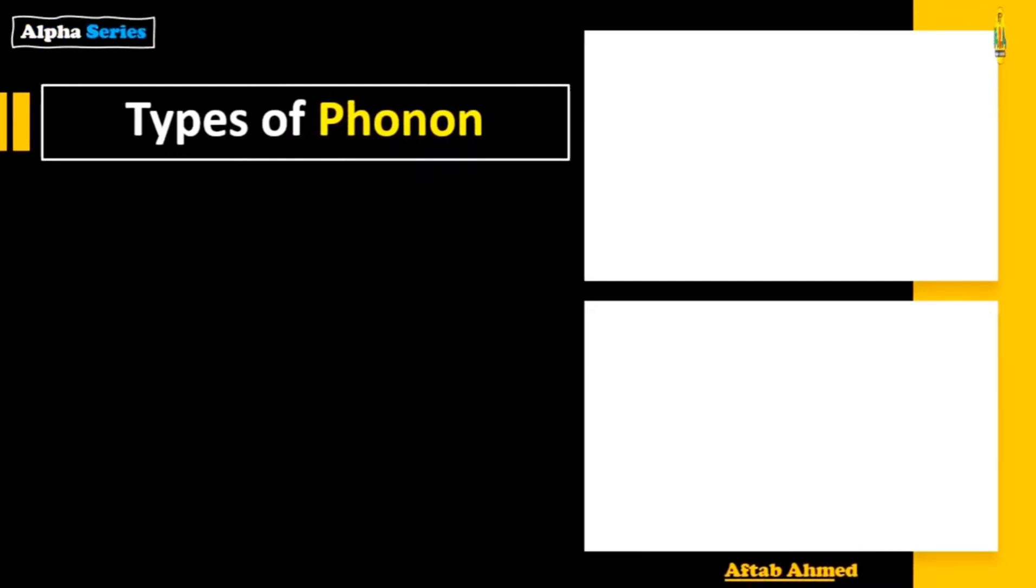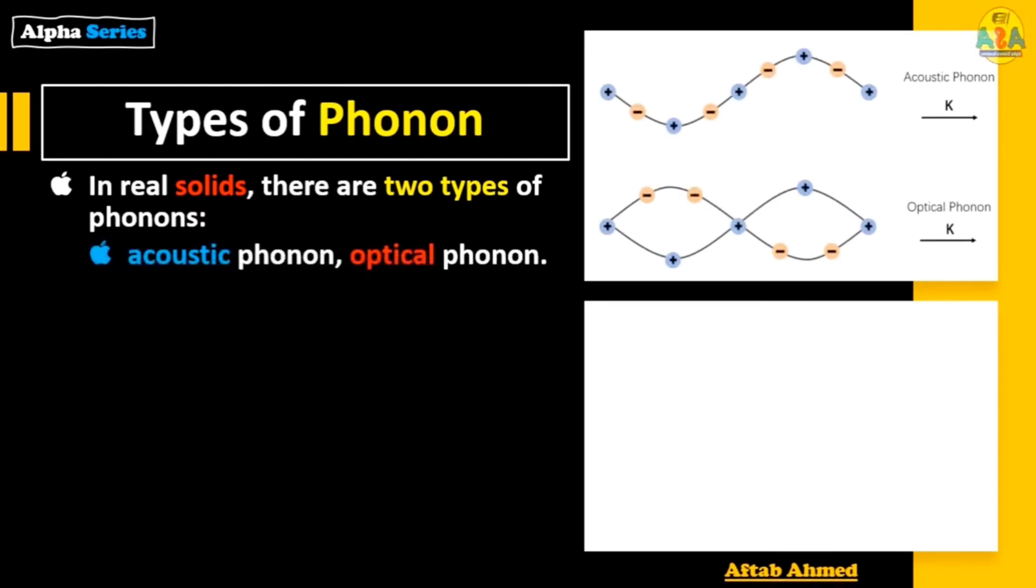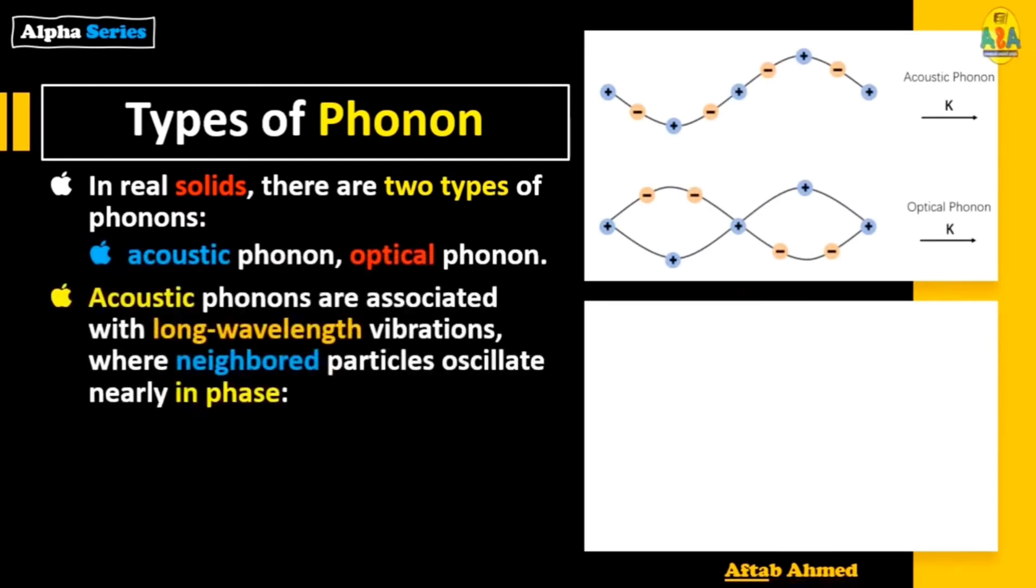In real solids there are two types of phonons: number one, acoustic phonon; number two, optical phonon. Acoustic phonons are associated with long wavelength vibrations where neighbor particles oscillate nearly in phase.